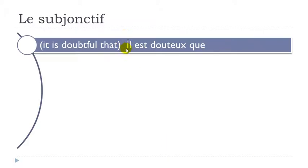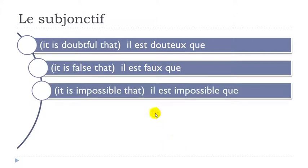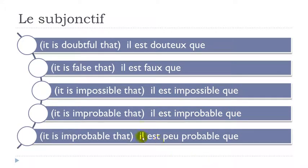We are going to use le subjonctif after these expressions: il est douteux que, il est faux que, il est impossible que, il est improbable que, il est peu probable que. Remember, after these expressions you will have to use le subjonctif.